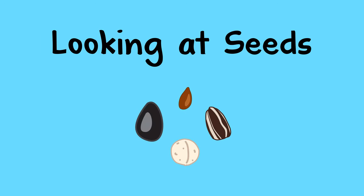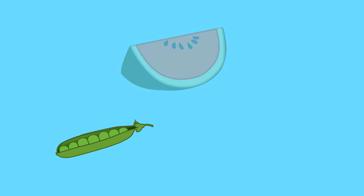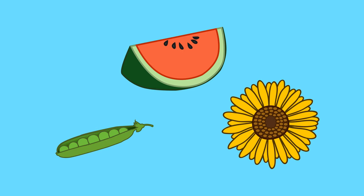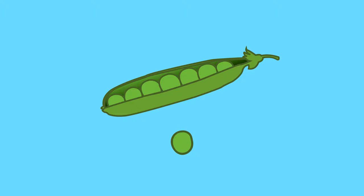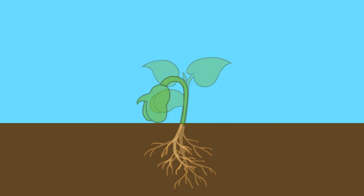You can help a child learn about seeds by talking about how they are the same and different. They can collect different kinds of seeds found in vegetables, fruits, and other plants. You can explain that all seeds come from plants and can grow into a new plant.